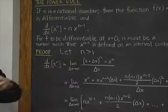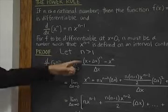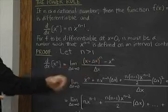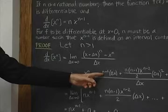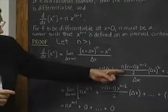We can use the binomial expansion to write (x + delta x)^n in the following way. That's x^n plus nx^(n-1) delta x. The next term: